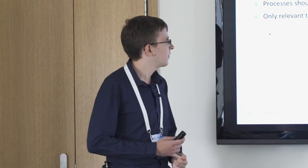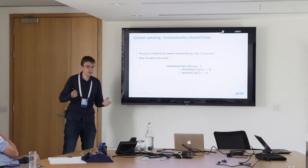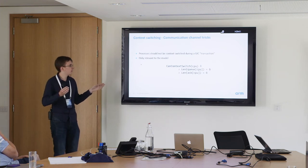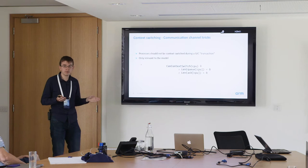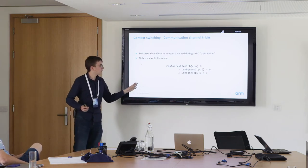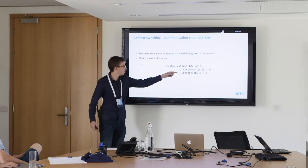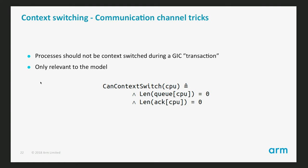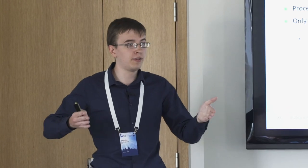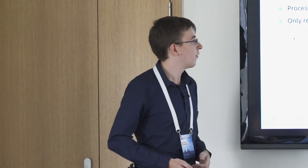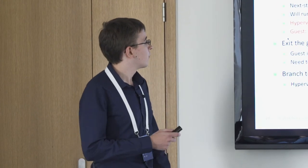One thing related to the communication channel that isn't really relevant in real life: I can exit the guest and let the hypervisor run again in the middle of a transaction on the communication channel. If the guest is in the middle of requesting register access there could still be values in those variables, so I must make sure I cannot context switch when there's still something in those two variables. In real life you preempt the guest before or after the instruction that accesses registers, so it's only a model concern.